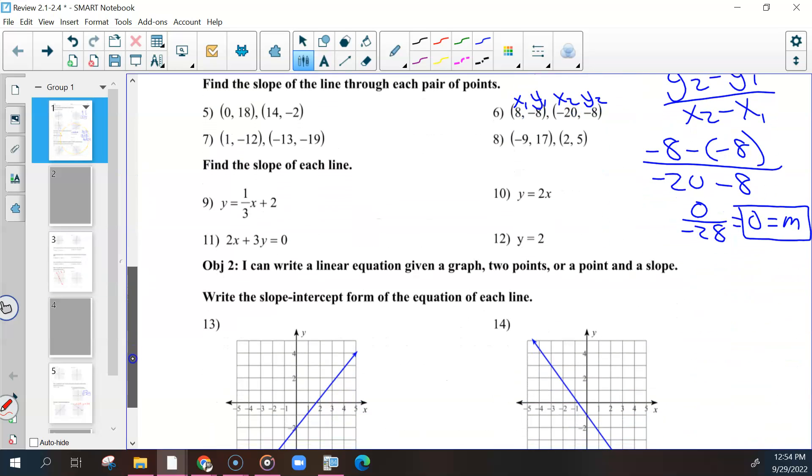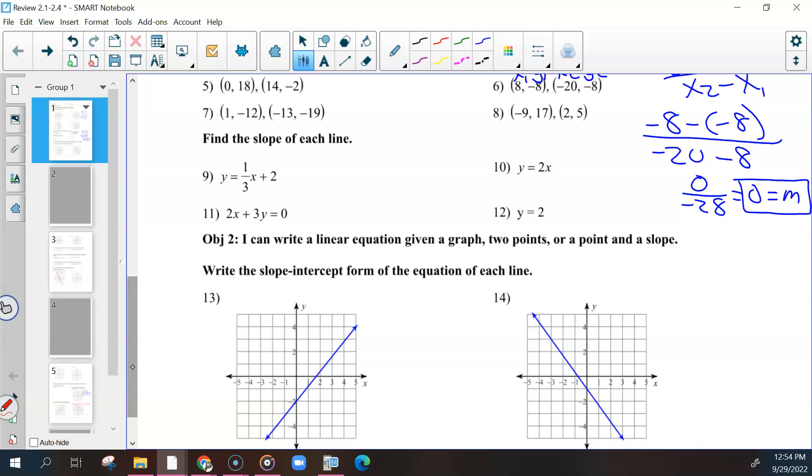This one is asking you to find the slope of this line. This is in slope-intercept form, so you just have to know which of these is your slope. The one-third is your slope, so m equals one-third.